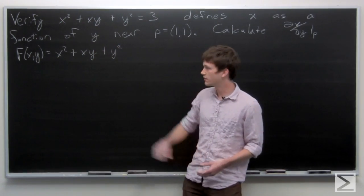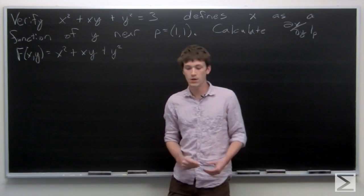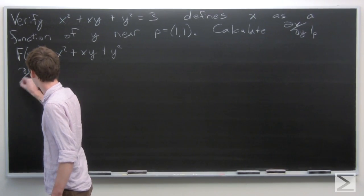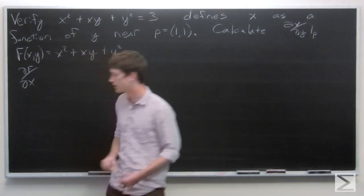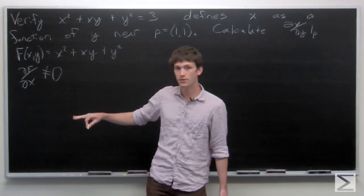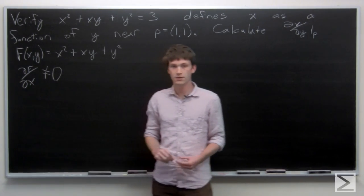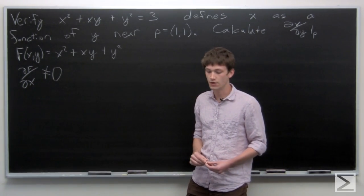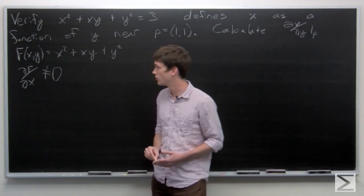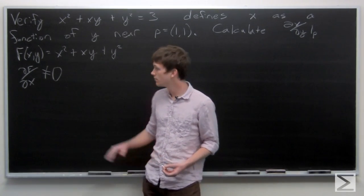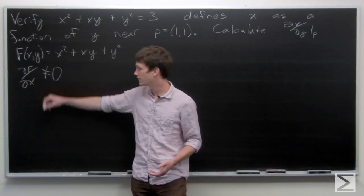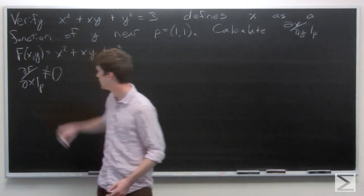So if we give this function a name f, we know that anywhere the partial derivative of f with respect to x is non-zero, then we can implicitly define x as a function of y in this case, since there's only one other variable. So we want to calculate our partial derivative of f with respect to x and see if at the point p it is non-zero.